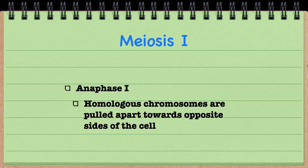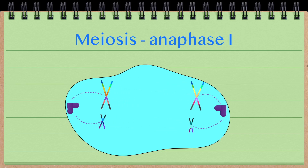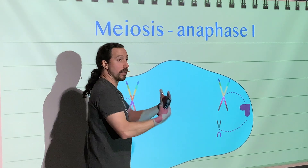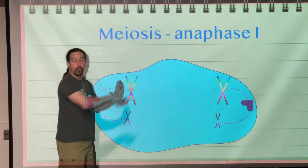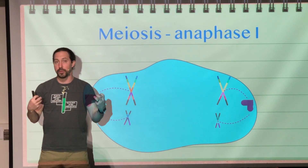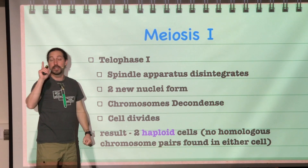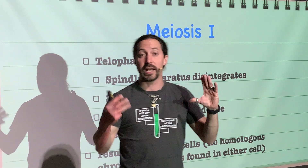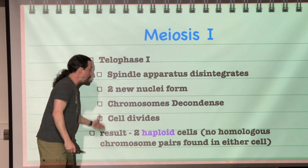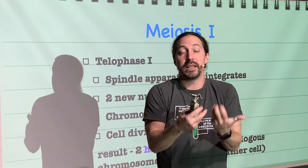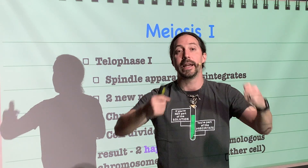In anaphase I, our homologous chromosomes are pulled apart toward the opposite sides of the cell. Because they lined up independently, we are now shuffling the way the chromosomes are getting separated. This leads us to telophase I, where the spindle apparatus disintegrates, two new nuclei form, the chromosomes decondense, and cytokinesis takes place. The result is two haploid cells — these cells no longer have homologous pairs of chromosomes, because that is what got pulled apart in anaphase I.